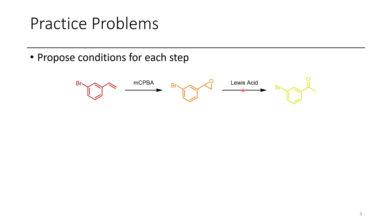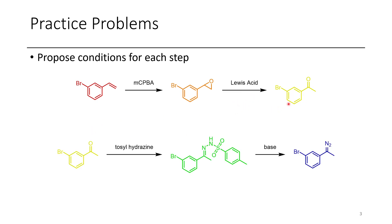A possible Lewis acid for this transformation would be something like BF3 etherate. After this, once we have this acetophenone, all we have to do is treat it with tosylhydrazine and this hydrazone is going to be easily formed. Upon treatment with base this affords the diazo compound. The base for this reaction could be sodium hydride, or something a little bit milder like tert-butoxide.